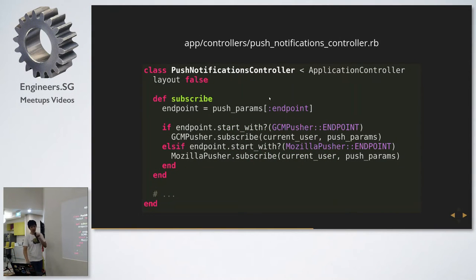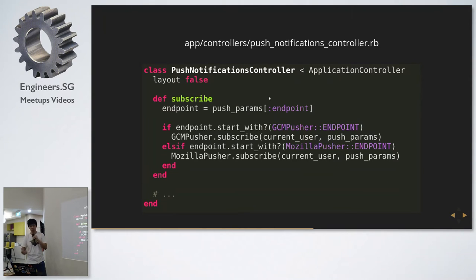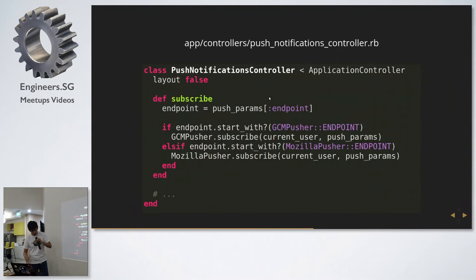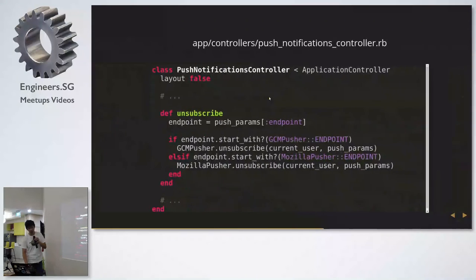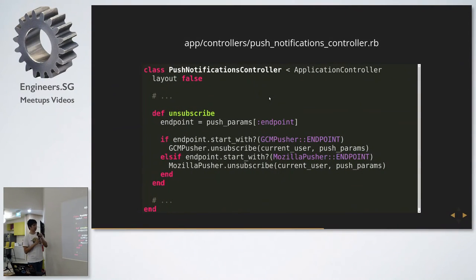We get the subscription and pass it to either the Google Cloud Messaging pusher or the Mozilla pusher — they handle subscription and unsubscription the same way, but pushing is different. You need two different classes or service objects to handle pushing notifications. From the subscription endpoint, you can identify which service to use — if it starts with android.googleapis.com, you know it's a Google subscription; otherwise it's a Mozilla browser subscription.